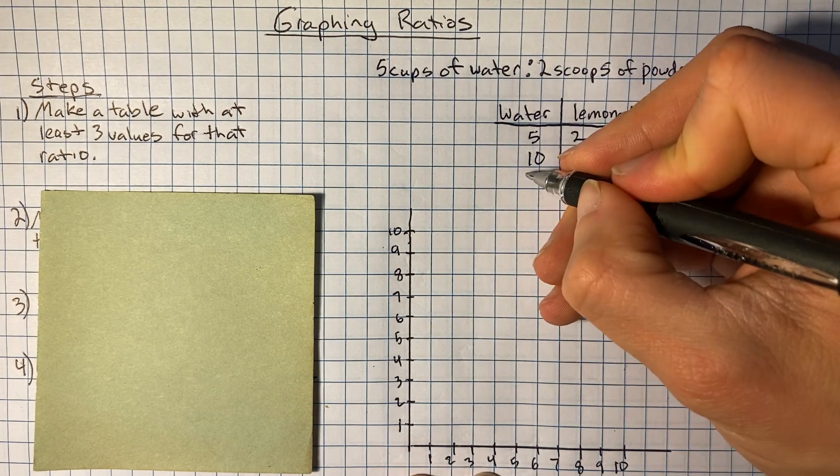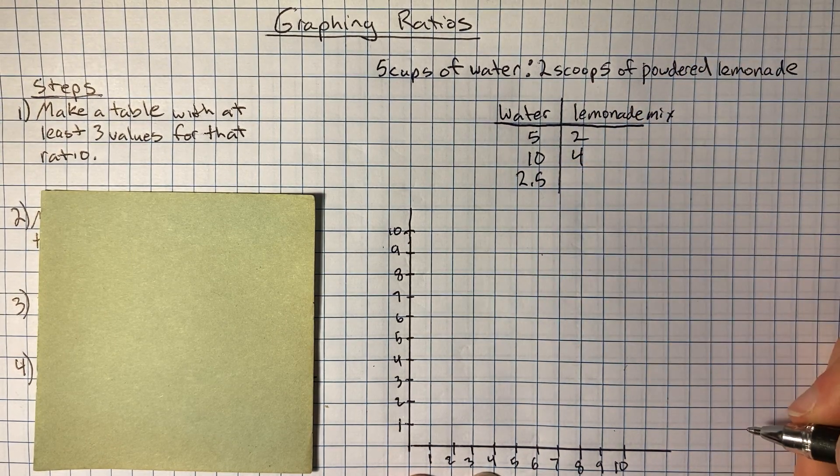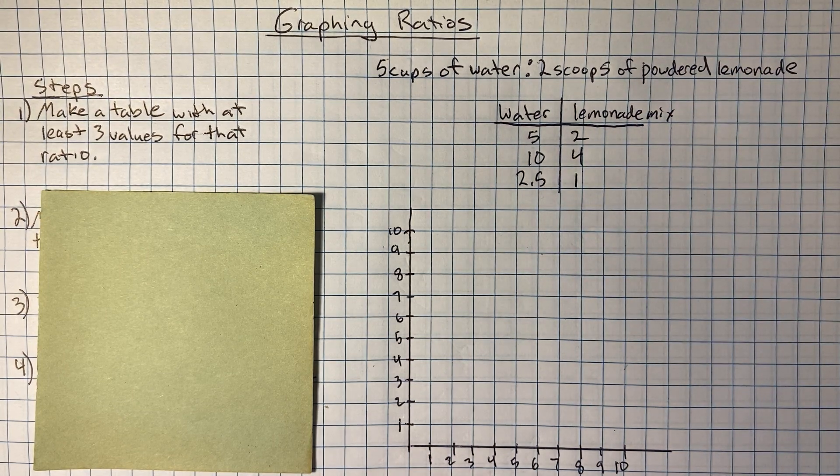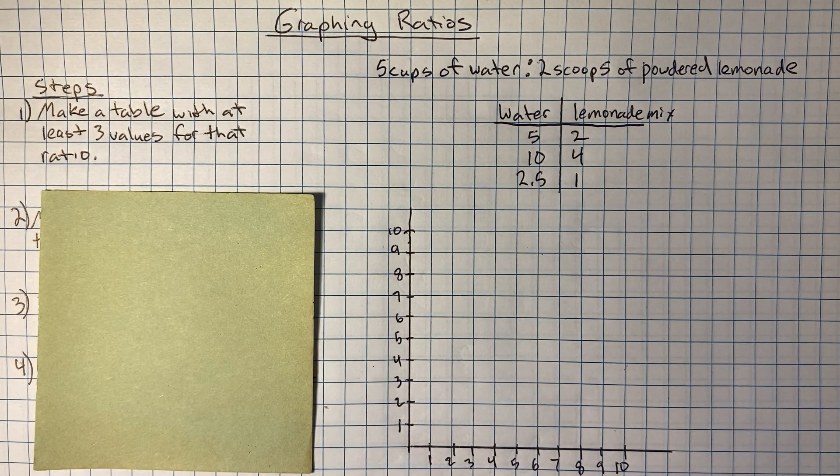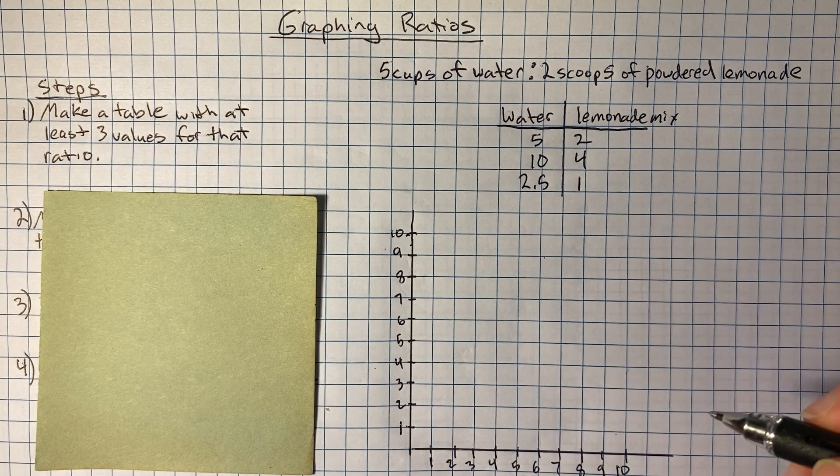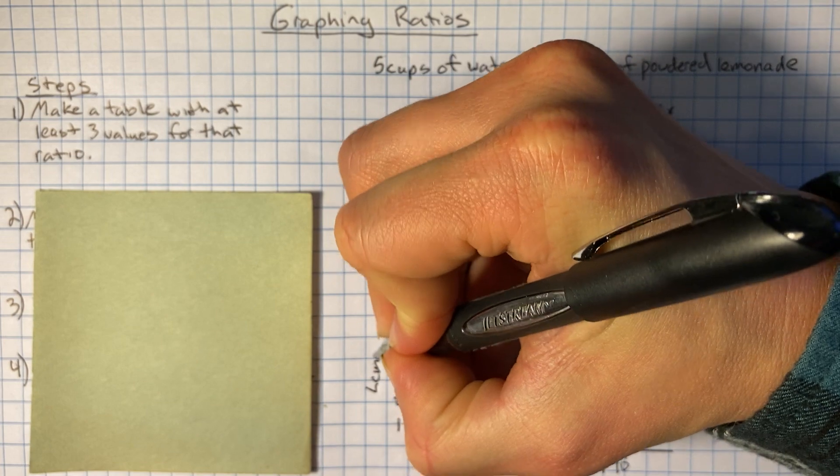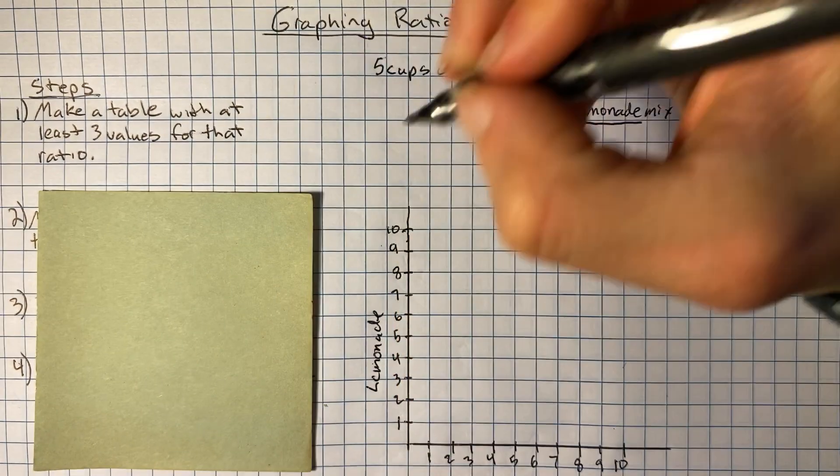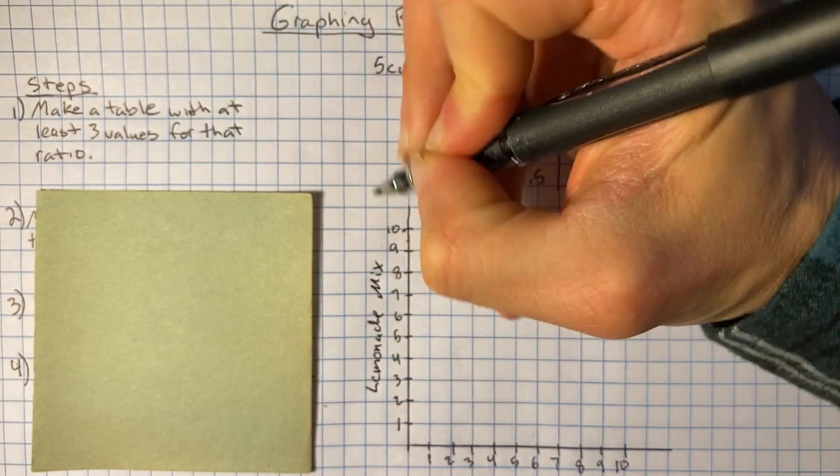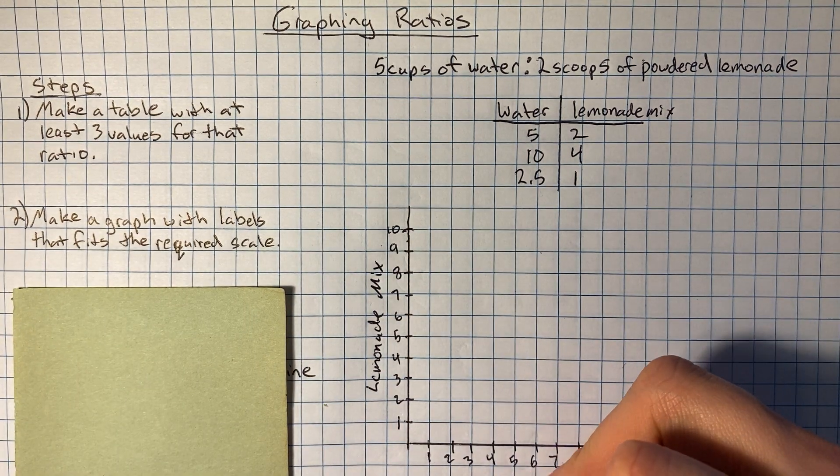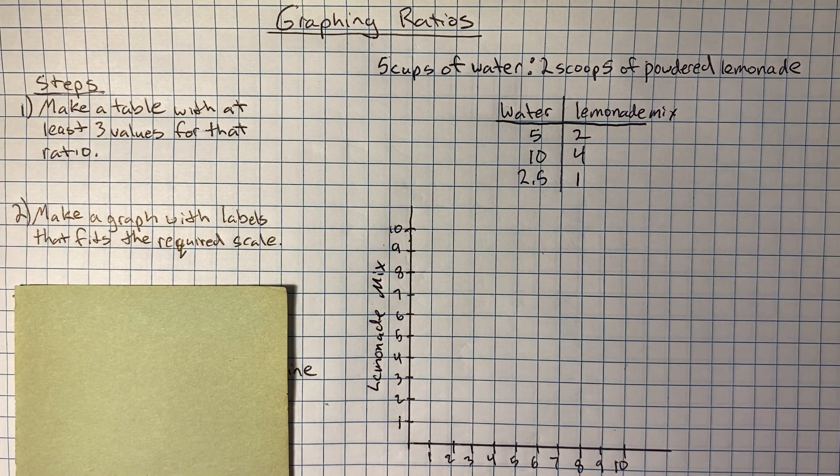We could have also halved this, and we could say, well, if I had 2.5 cups of water, I would require one scoop of lemonade mix. And then I'm going to take right here, and I'm going to decide we'll do the lemonade mix right here. And then we'll do the water right here.